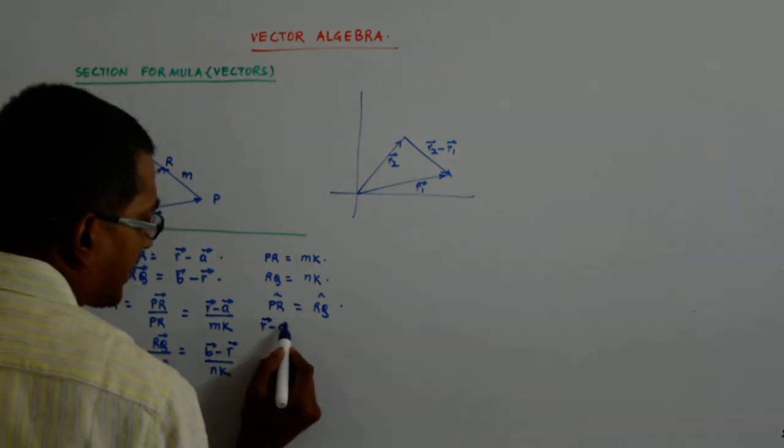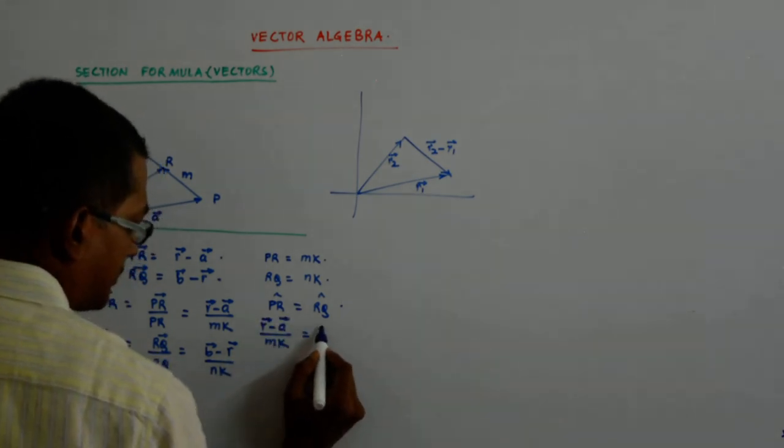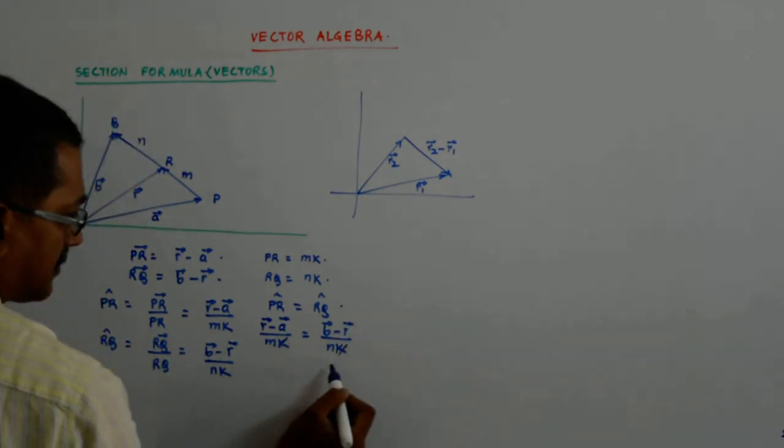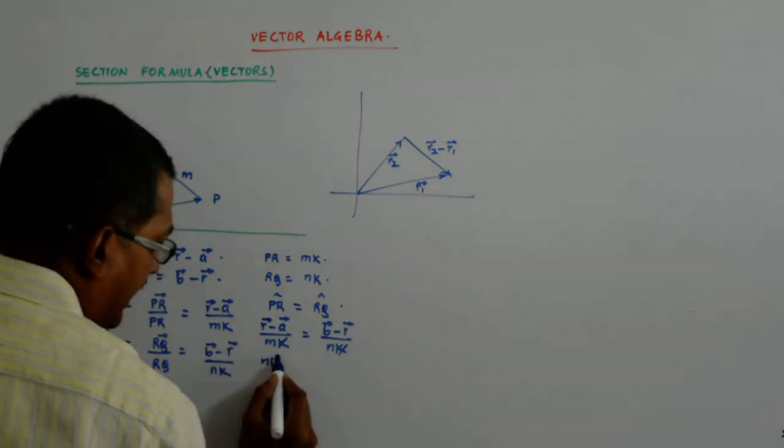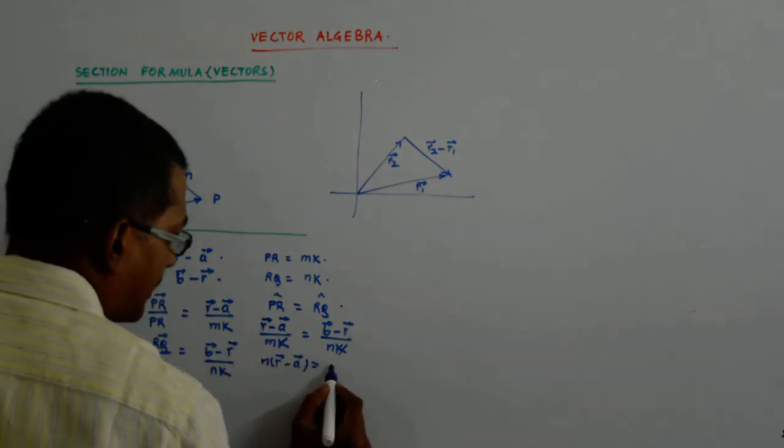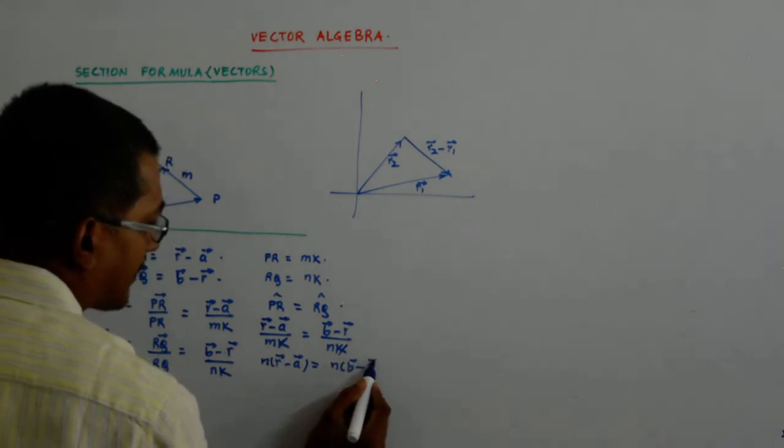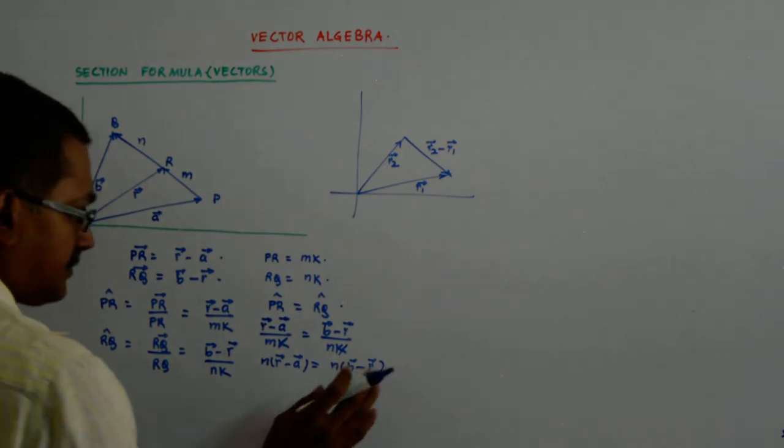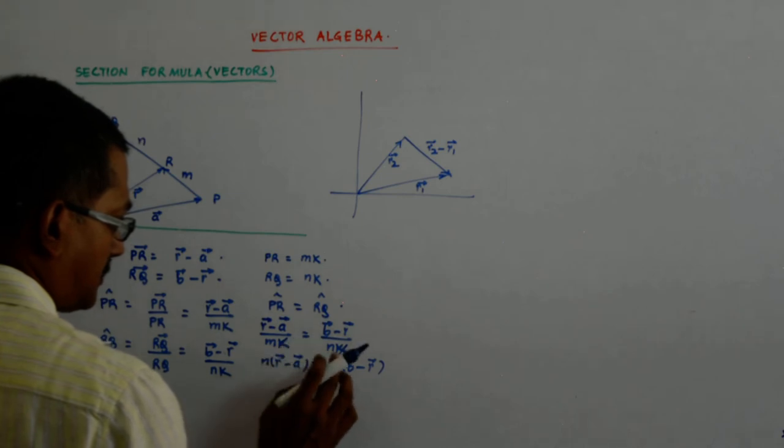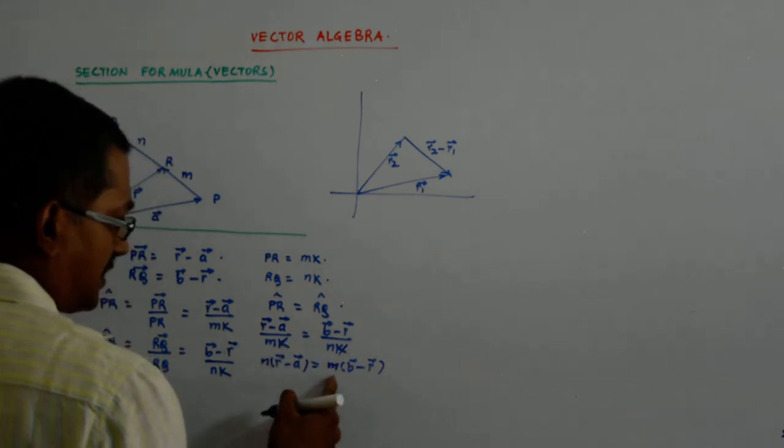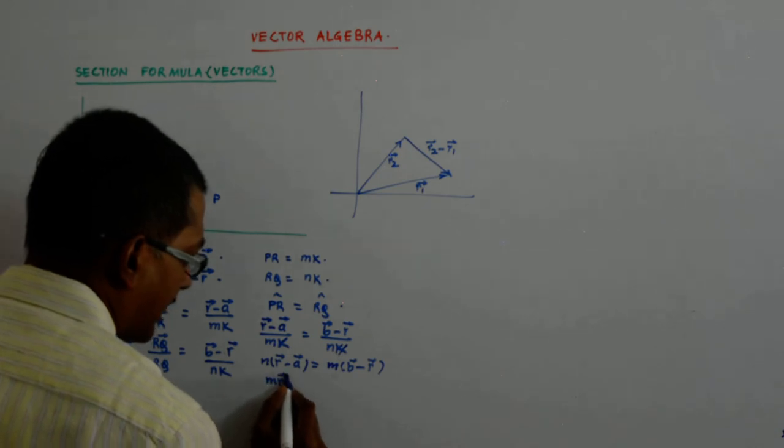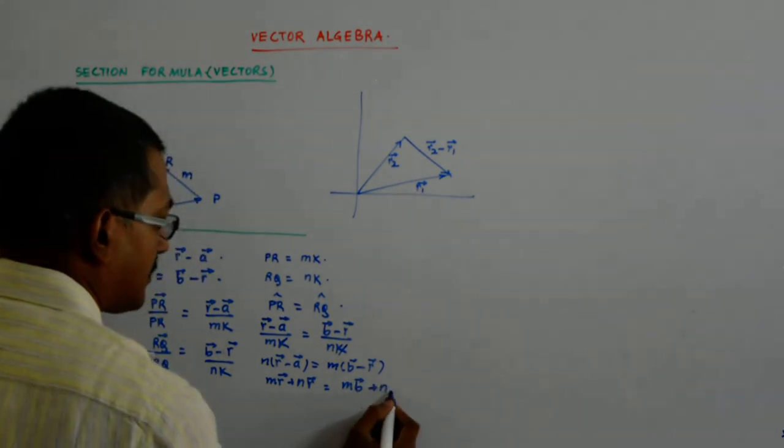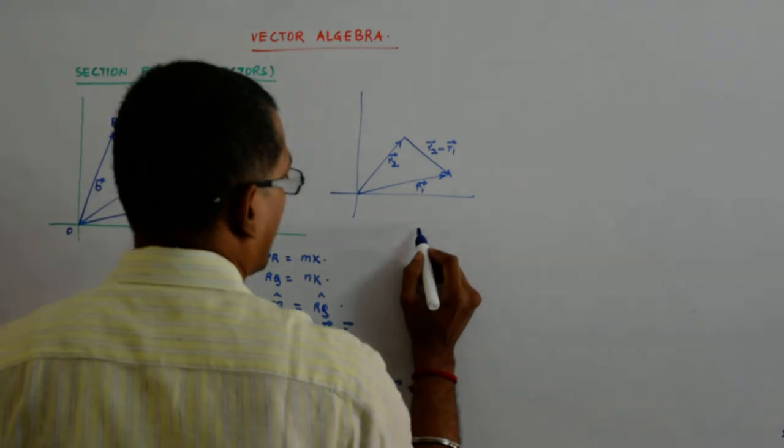Now, that gives you r minus a upon mk is equal to b minus r upon nk. So it gives you n into r minus a, n times k, is equal to m into b minus r, m times k. So it becomes mr plus nr is equal to mb plus na. So I get it.